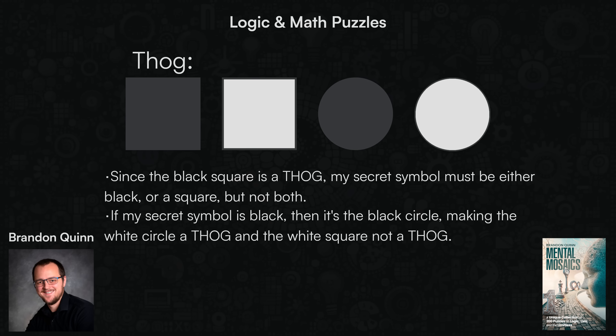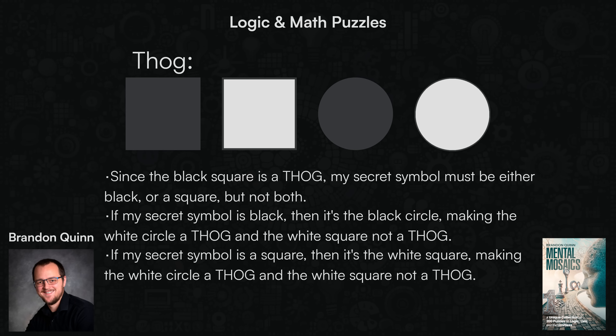If that's the case, then my secret symbol must be the white square because, again, the black square is the Thog, as we already know from the problem. In that case, the white circle is again a Thog, sharing the color in common with my secret symbol, and the white square itself cannot be a Thog because that is my secret symbol in this scenario.